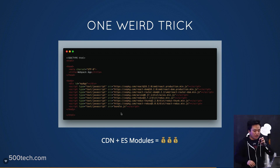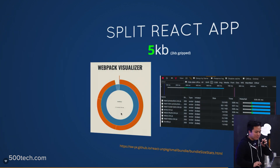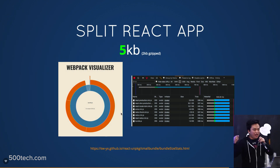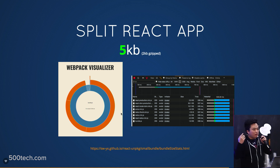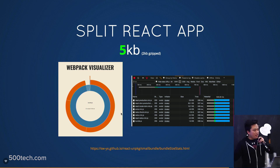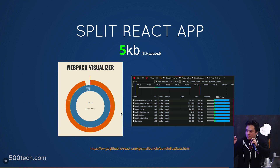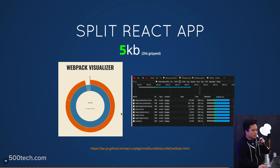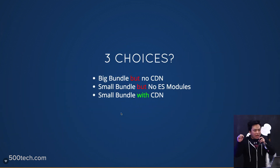CDN plus ES modules is the result: everything reduces to a five-kilobyte bundle because now it's just your code. You parallel-load the rest, and it's probably from cache since you've already visited a site that uses React somewhere. That's how easy it was — two lines of code.